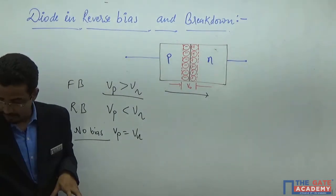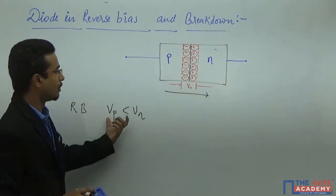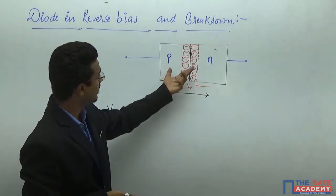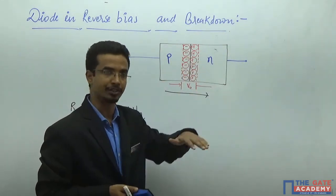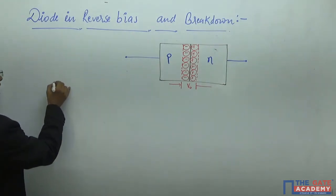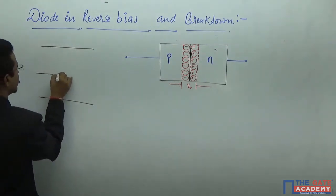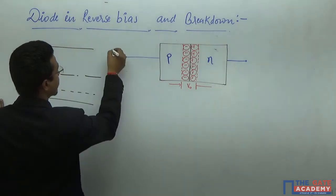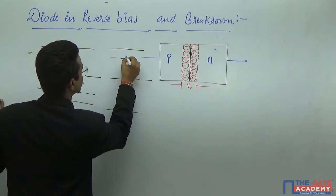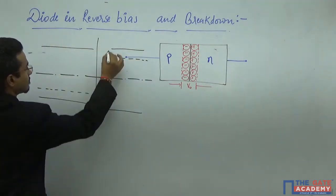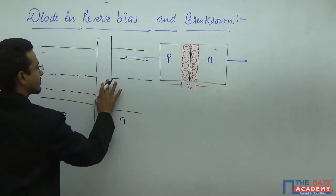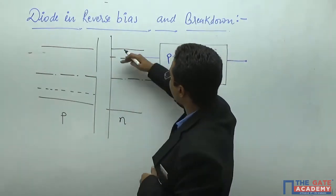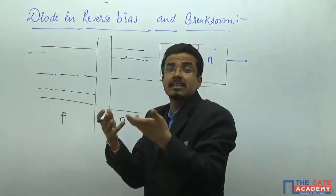In this class we will discuss specifically the reverse bias condition. Before that, we take the equilibrium condition — where you are not providing any external voltage. How does the energy band diagram of this particular p-n junction look at equilibrium? The electron flows from higher energy level to lower energy level to equalize the energy, and that is the equilibrium condition.